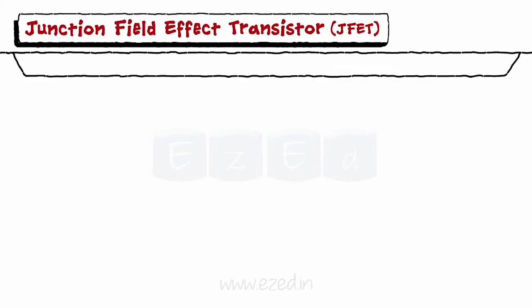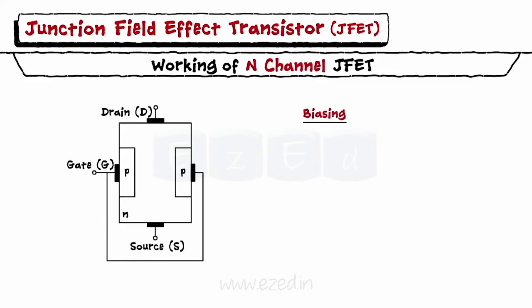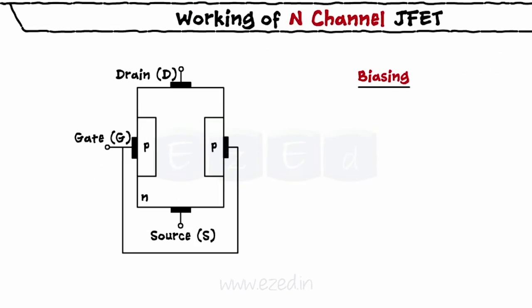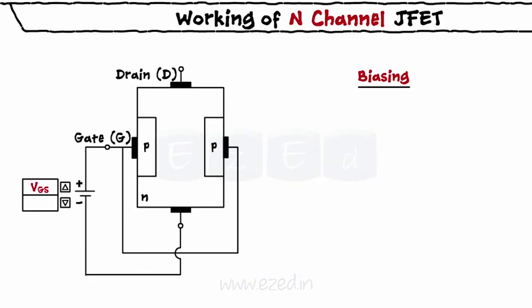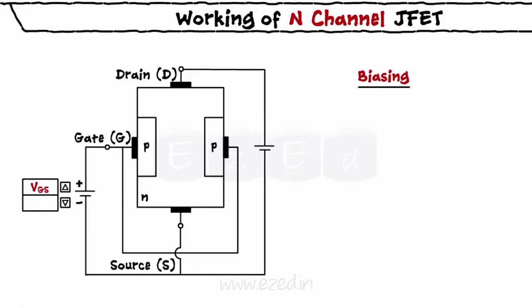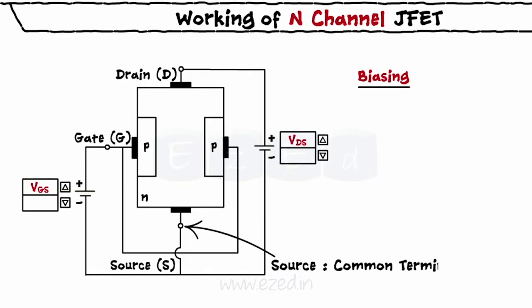Moving forward towards the working, let's bias the JFET with two voltage sources — one between the gate and the source as VGS, and the second between the drain and the source as VDS. The source acts as a common terminal.